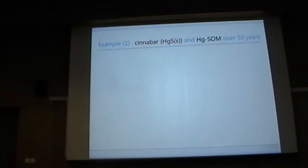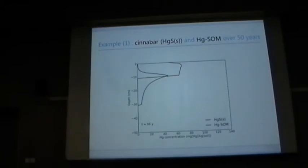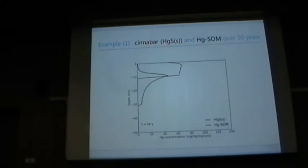So first example of simulation results is cinnabar initial contamination. And we will look here at the profiles of cinnabar and mercury sorbed to the solid phase over a period of 50 years. So you see the red line is the cinnabar and the black line is the sorbed one. And you see during time the dissolution of this mercury cinnabar with time and then the transfer of the mercury to the deeper horizons, as expected. And we have a little bit faster dissolution rate at the top. That's because the DOM concentration there is the highest and the dissolution rate depends on this parameter.